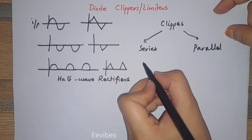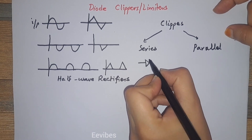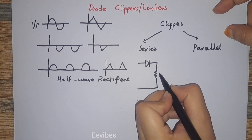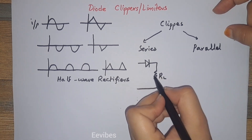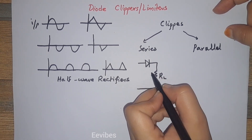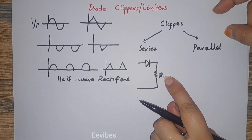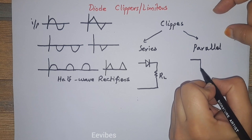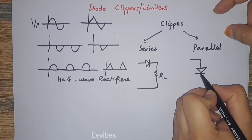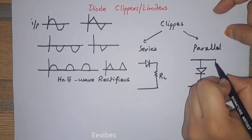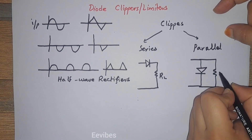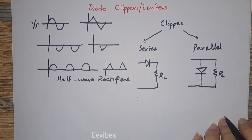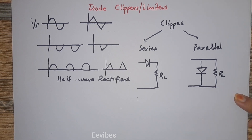The classification depends on how the diode is connected with the load. If this is a load resistor R_L and the diode is connected in series with it, then such types of clipper circuits are known as series clippers. Similarly, if both the diode and the load resistor are connected in parallel with each other, then such types of clipper circuits are known as parallel clipper circuits.